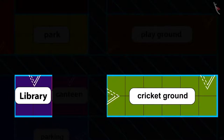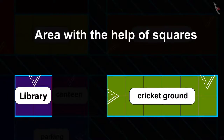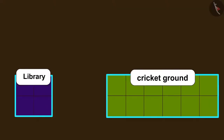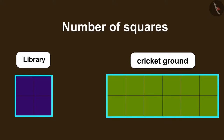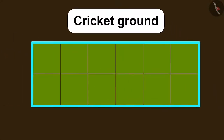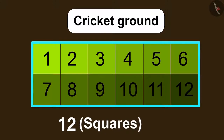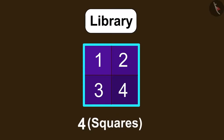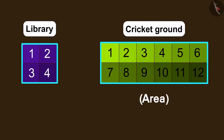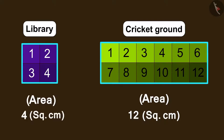Kids, do you remember the process of finding the area of any given place using the method of squares? In this process, we can find the area of any given place using the number of similar squares that the respective place has. If we look at the cricket ground, it is made of 12 squares, while the library is made of only 4 squares. So the area of the cricket ground is 12 square centimetres, while the area of the library is 4 square centimetres.